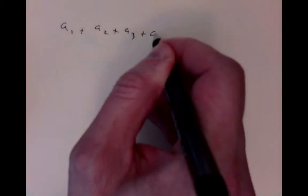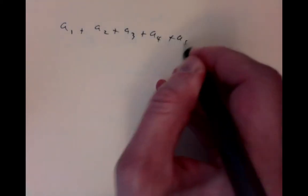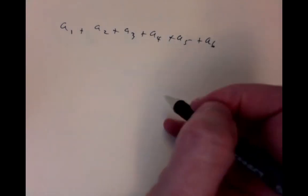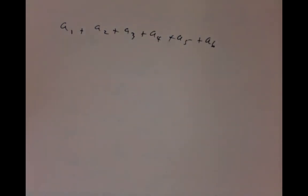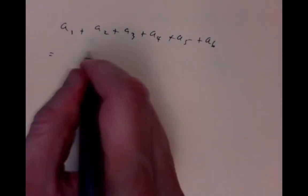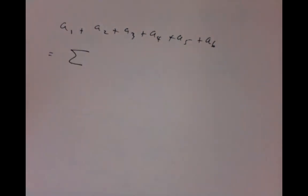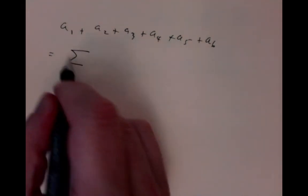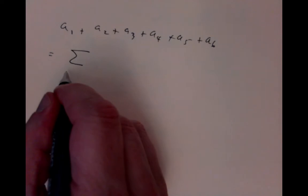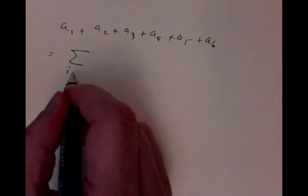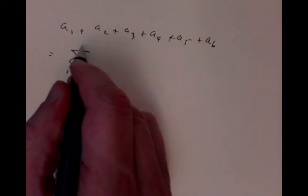It becomes tedious to write already for finite sums like this, such a long thing. So it's convenient to write it as the sum, sigma, the Greek letter sigma to represent the word sum.